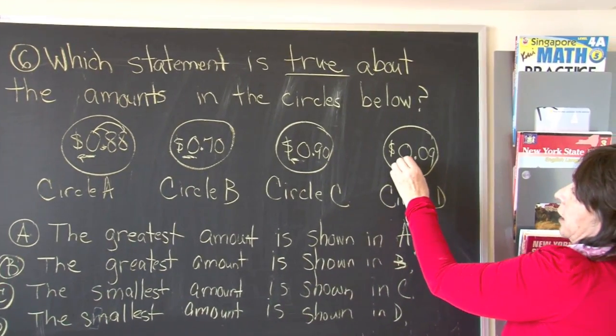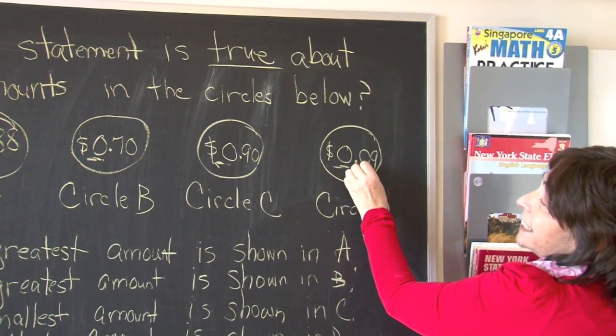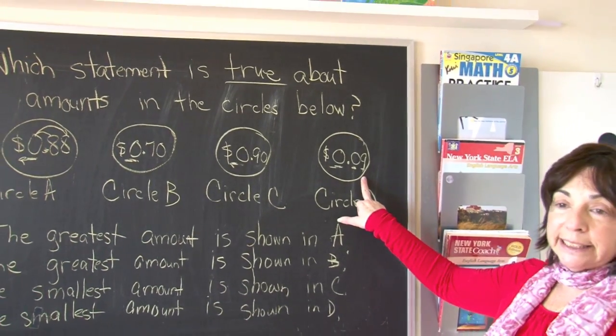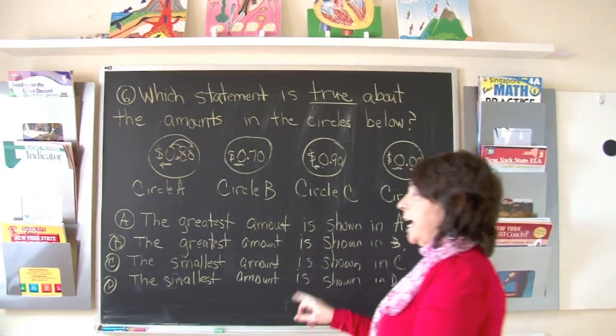Circle D. Once again, no whole numbers, but there are zero tenths here and nine hundredths. This would be the equivalent of nine cents, like nine pennies. Let's read what the choices say.